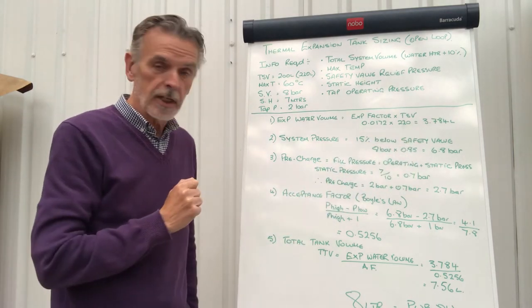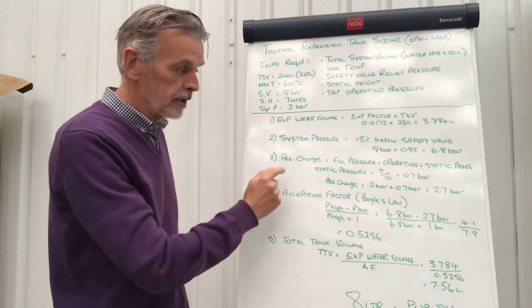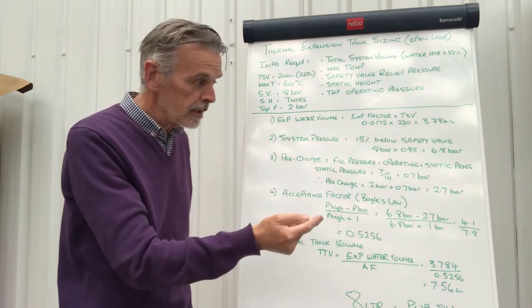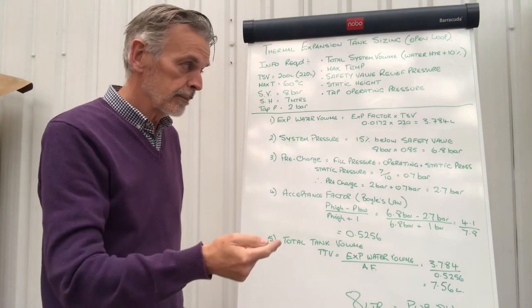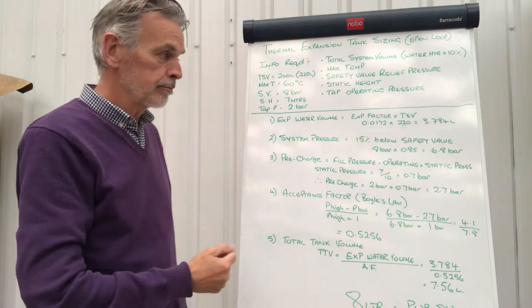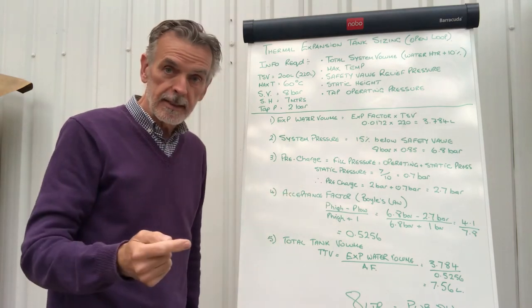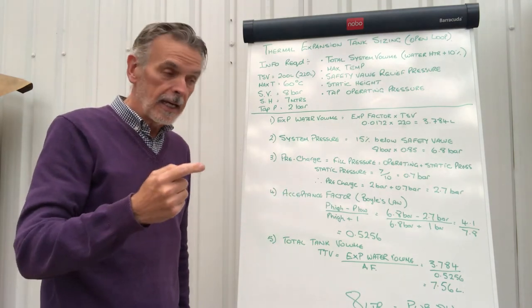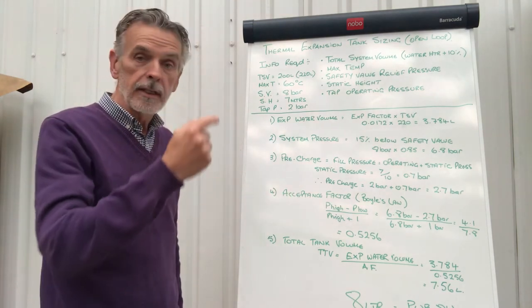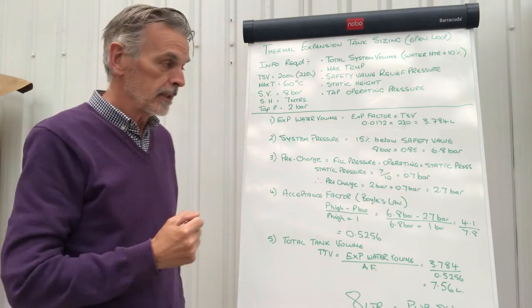Let's calculate now the pre-charge of the expansion vessel. So the pre-charge is equal to the fill pressure, which is equal to the operating pressure plus static height pressure. So the static pressure, as I said to you before, is the height to the furthest, the highest discharge point in the building.